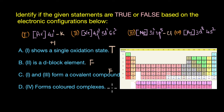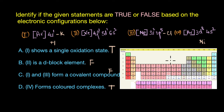The last statement says element 4 forms colored complexes — this is true. Element 4 refers to nickel, a transition element in the d-block. Transition elements are known to form vibrantly colored complexes; nickel complexes are mostly green or blue. In summary, statements A and D are true, while statements B and C are false.